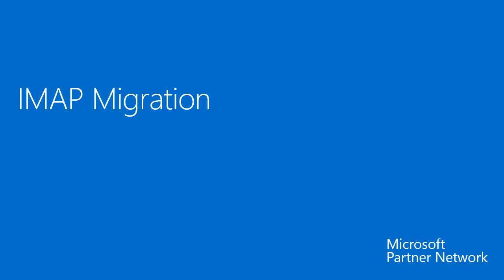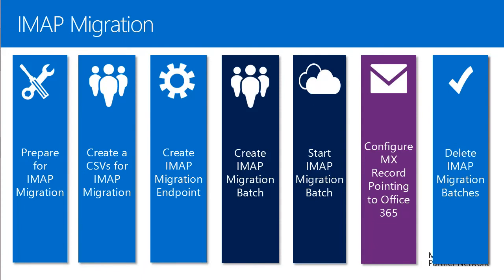Now let me describe the IMAP migration and highlight the differences versus the cutover migration. The general IMAP migration process is pretty much the same. The key differences are in dark blue: for IMAP migration, we create a migration batch or multiple migration batches, which handle the synchronization. Since you can run multiple batches, you can schedule migration in groups of users. The step in purple is changing the MX records to point to Office 365, which performs the actual switch to the cloud.